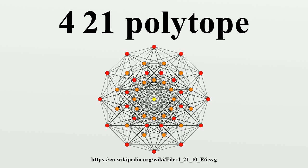In eight-dimensional geometry, the 421 is a semi-regular uniform 8-polytope constructed within the symmetry of the E8 group. It was discovered by Thorold Gossett, published in his 1900 paper. He called it an 8-IC semi-regular figure.